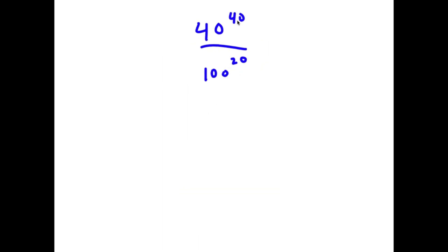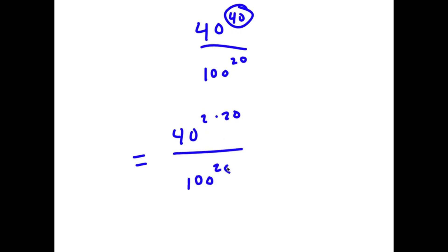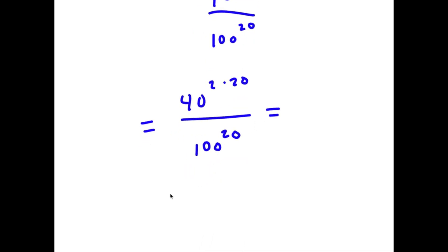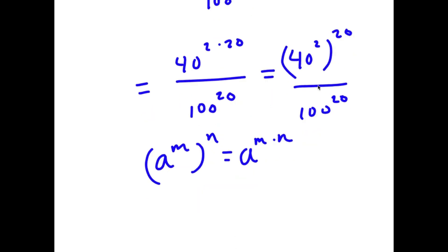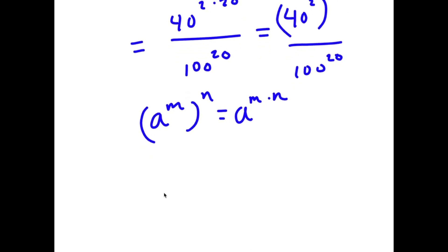In this problem, I have 40 to the power of 40 over 100 to the power of 20. To solve this, I'm going to first rewrite 40 as 2 times 20. So now I have 40 to the power of 2 times 20 over 100 to the power of 20. Using the property that a to the power of m to the power of n equals a to the power of m times n, I can write this as 40 to the power of 2 to the power of 20. And 40 to the power of 2 is 1,600. So now I have 1,600 to the power of 20 over 100 to the power of 20.